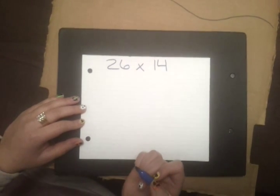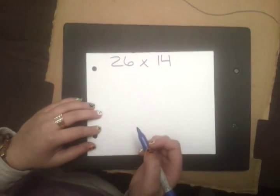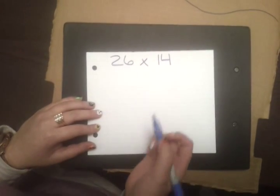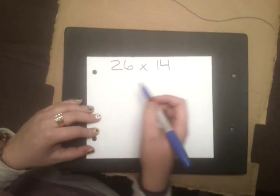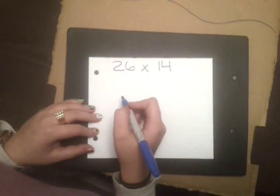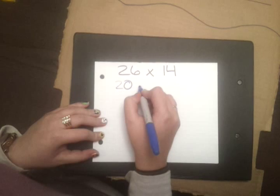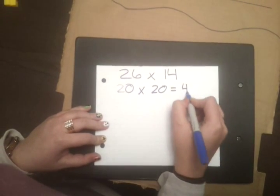First off, we'll start by estimating the product. We can do this by making the numbers friendlier to use by rounding down. First, I will take away 6 from the 26 and add 6 to 14. So, I will make 20 times 20, which is equal to 400.